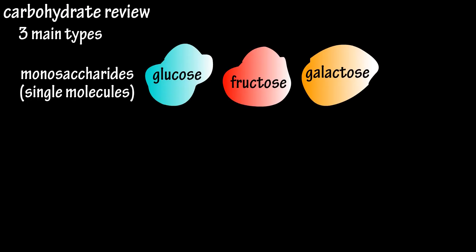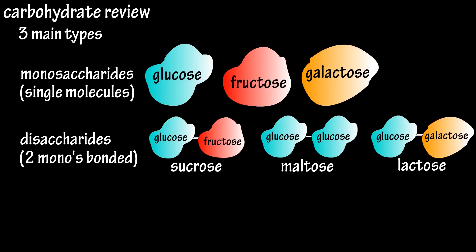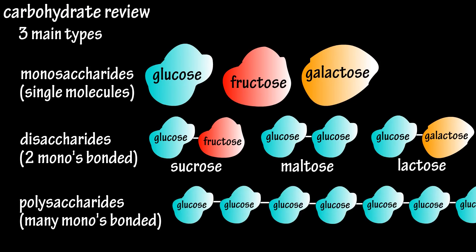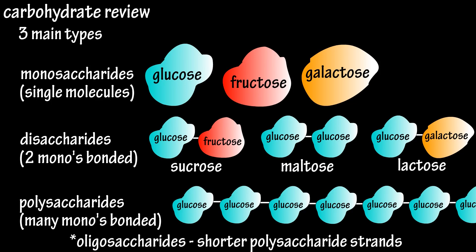A quick review. There are three main types of carbohydrates: monosaccharides, which are single molecules; disaccharides, which are two monosaccharide molecules bonded together; and polysaccharides, which are many monosaccharide molecules bonded together. Some shorter strands of polysaccharides are often called oligosaccharides.